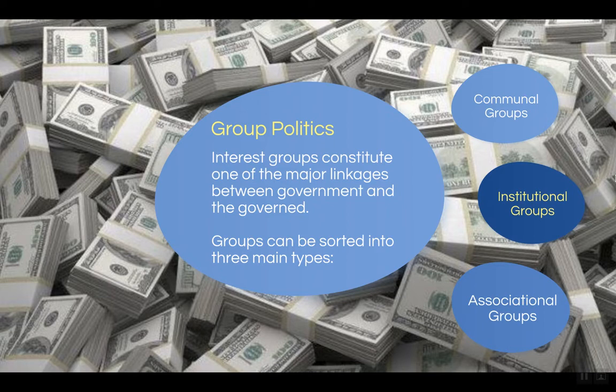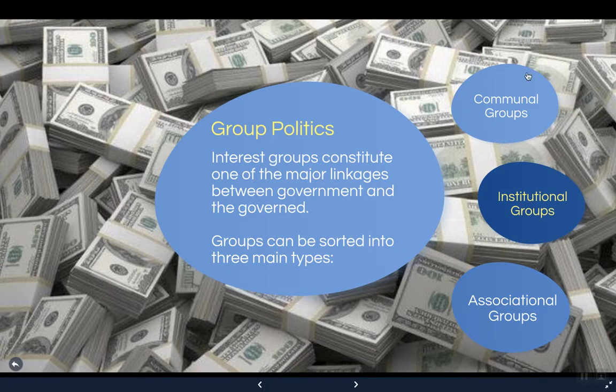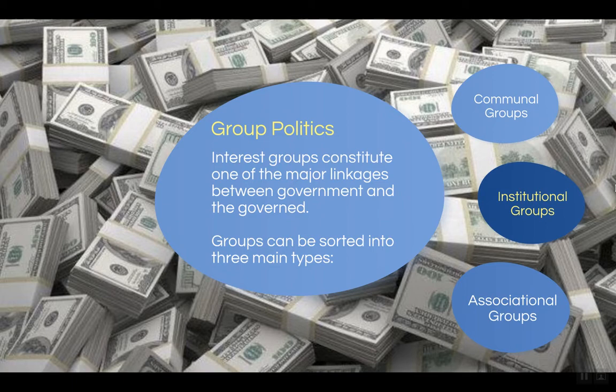Interest groups constitute one of the major linkages between government and the governed. Now groups can be sorted into three main types: communal groups, institutional groups, and associational groups, which often take the idea of those interest groups that we see in American politics.